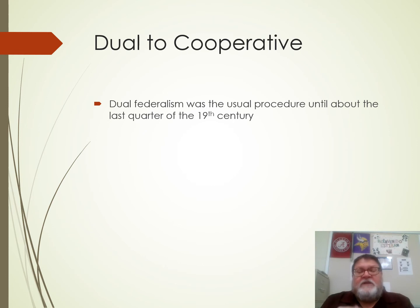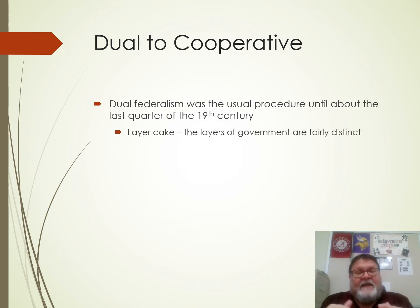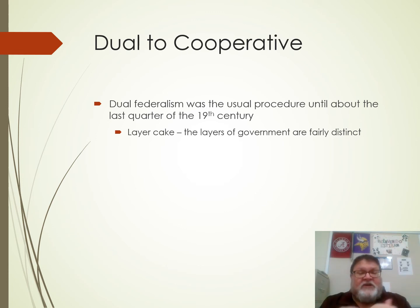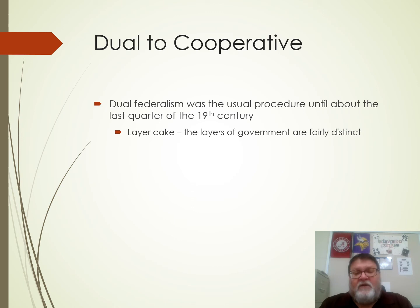Dual federalism was the usual way it was thought of until towards the end of the 19th century. The layers of government are fairly distinct — think of that as a cake: if you've got a chocolate layer and a vanilla layer, those are two separate things. That's the way it was usually looked at: states had their stuff, national had their stuff, and almost never did they intermingle.